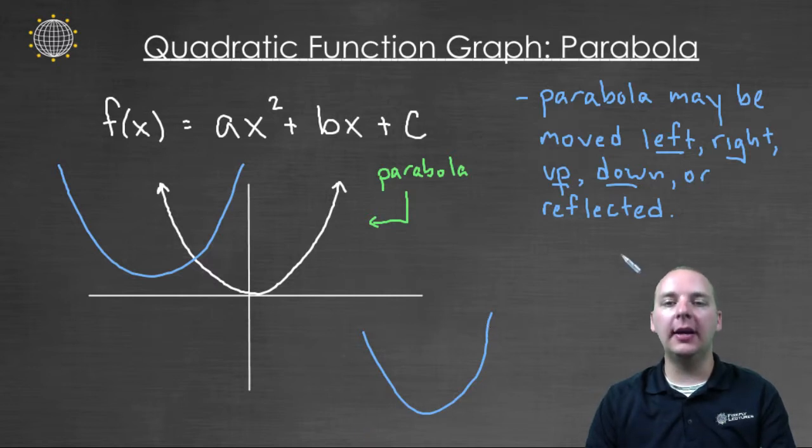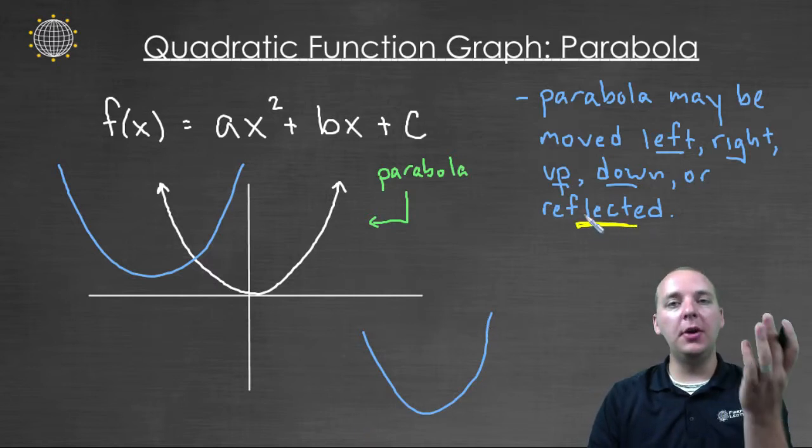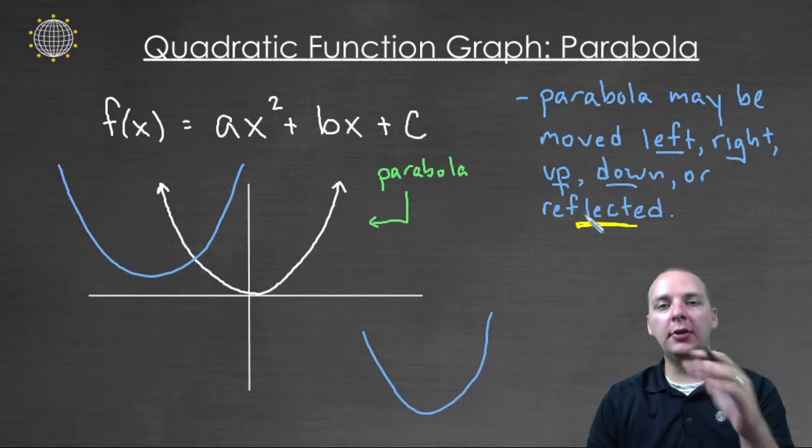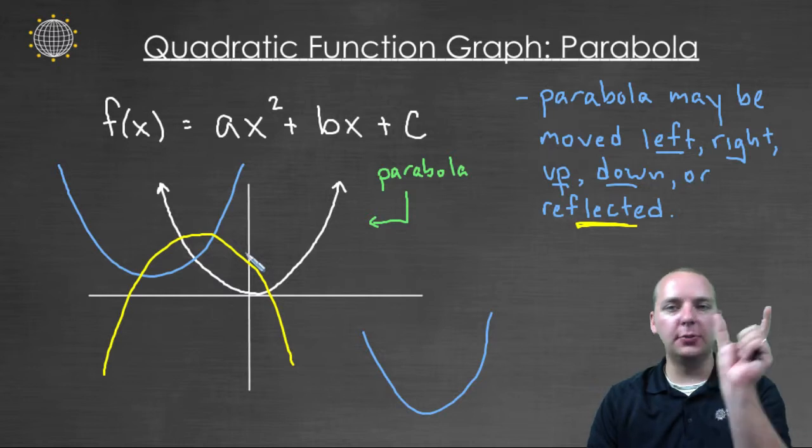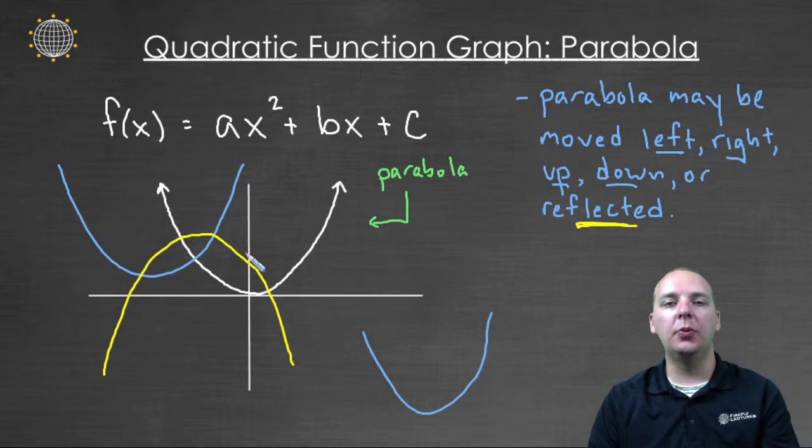Or it could be reflected, reflected like a mirror where it's turned the other way, not upwards but downwards. So this could be the graph of your quadratic function as well. So anything that looks like this u-shaped graph, moved around up, down, left, or right, or reflected downwards, is going to be called a parabola.